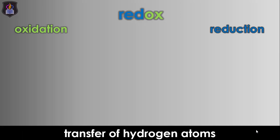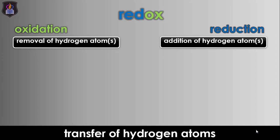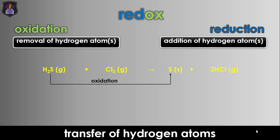Next is the transfer of hydrogen atoms. In terms of hydrogen transfer, oxidation is the removal of hydrogen atoms from a substance, while reduction is the addition of hydrogen atoms to a substance in a redox reaction. Consider the reaction between hydrogen sulfide gas and chlorine gas to form yellow deposits of sulfur and hydrogen chloride gas. In the reaction, hydrogen sulfide loses hydrogen atoms to chlorine gas and gets oxidized to sulfur, while chlorine gas is reduced to hydrogen chloride because it gained a hydrogen atom from hydrogen sulfide.